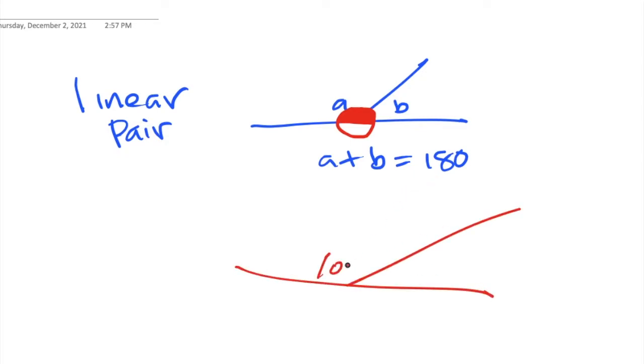If I know this one's 100 and this one we don't know, when you add them, they must add up to 180. So x will equal 80. Linear pairs are definitely going to help us.